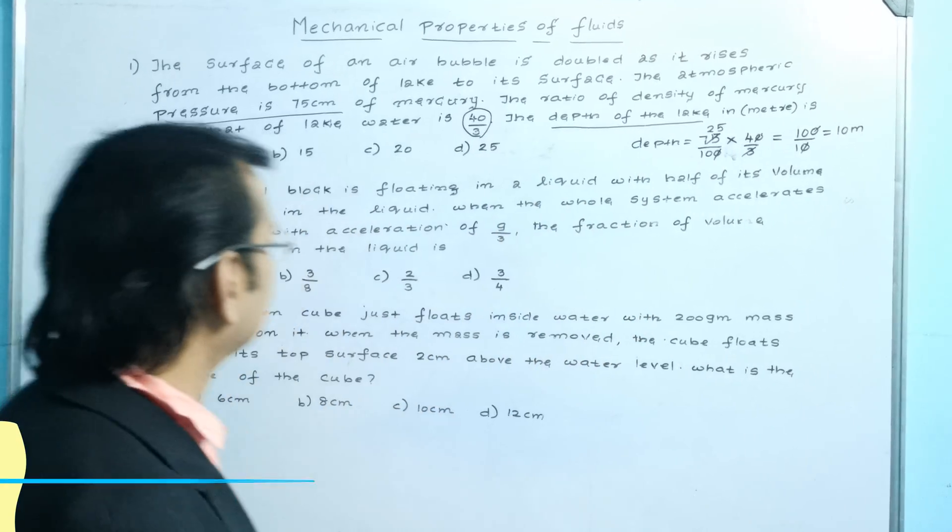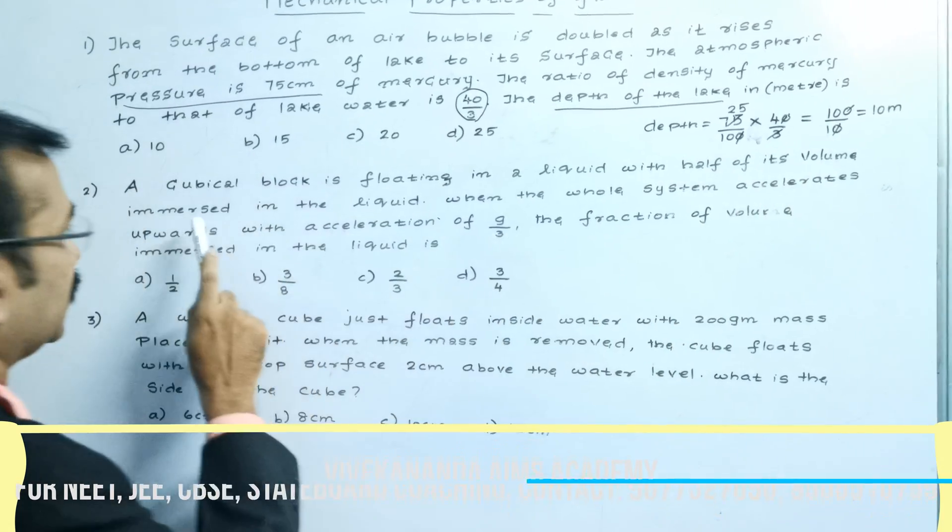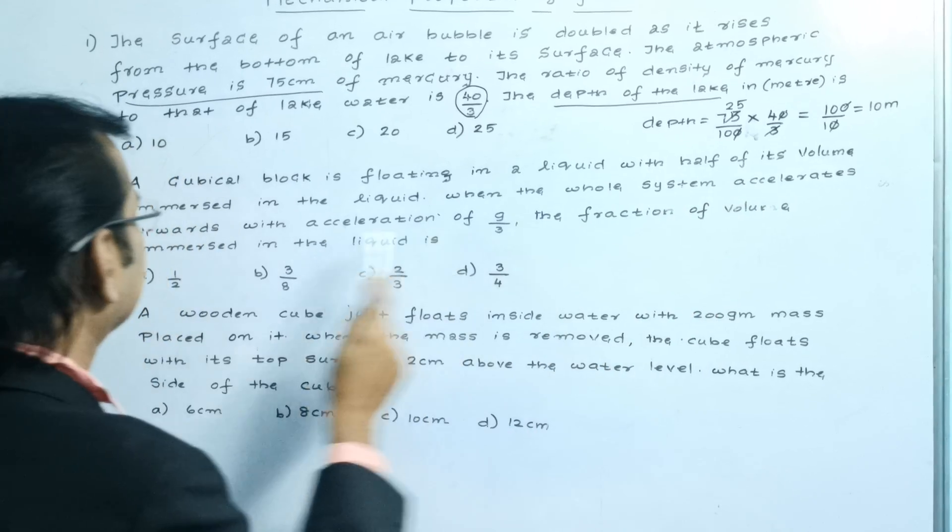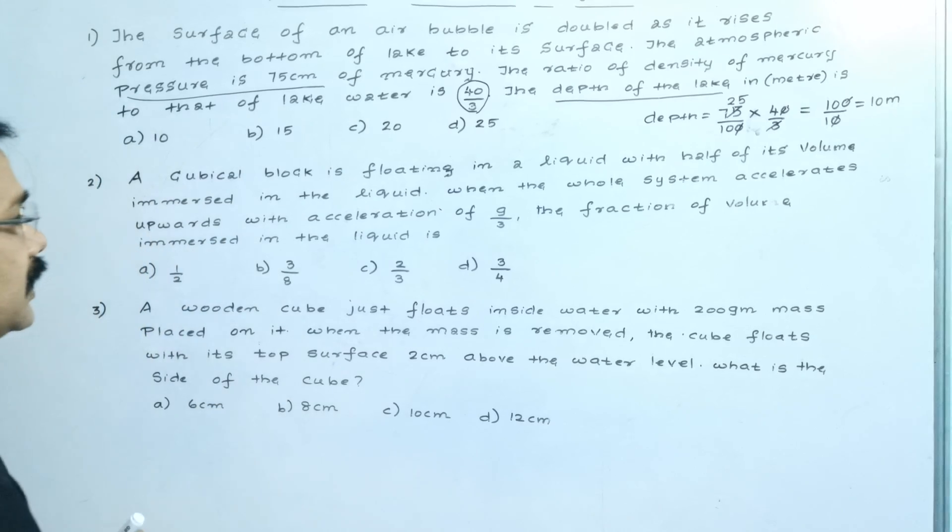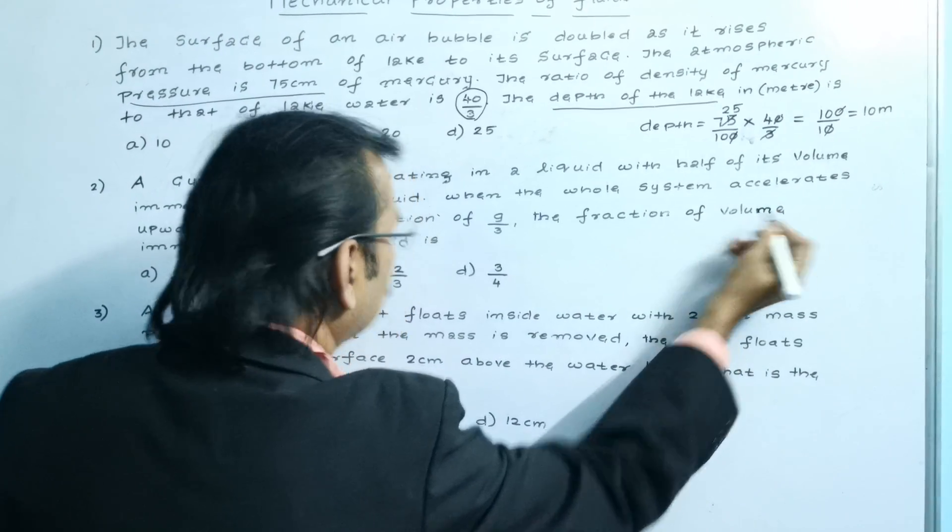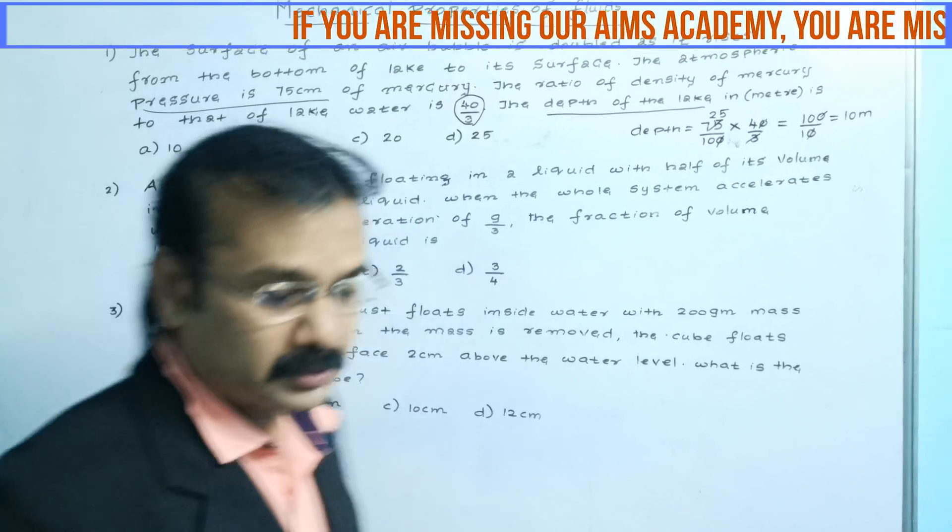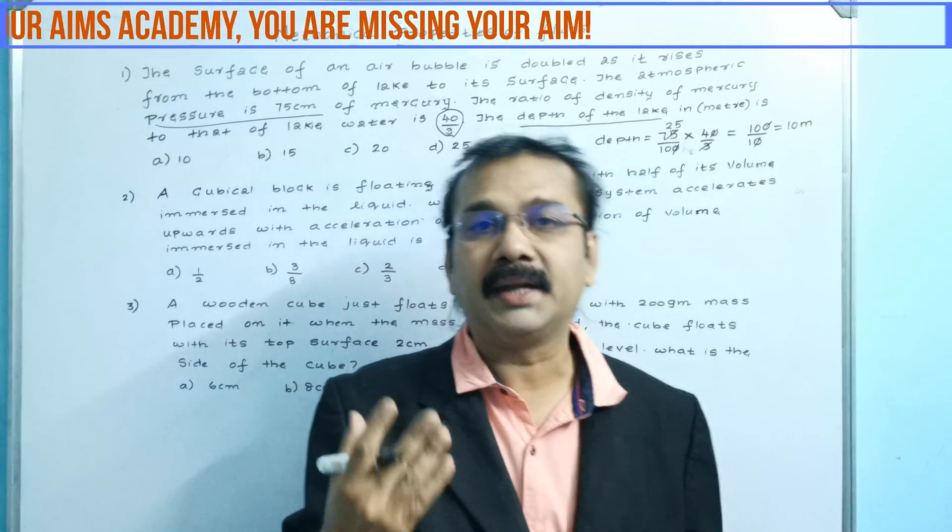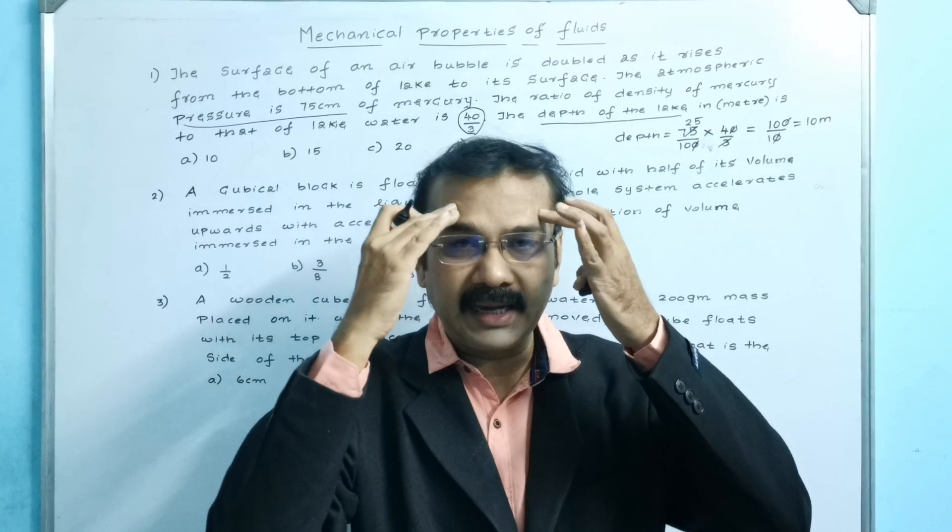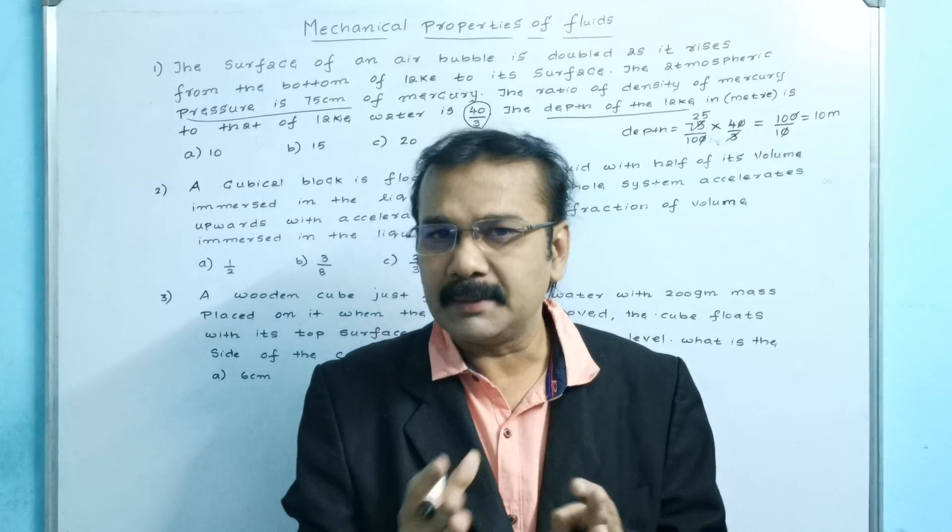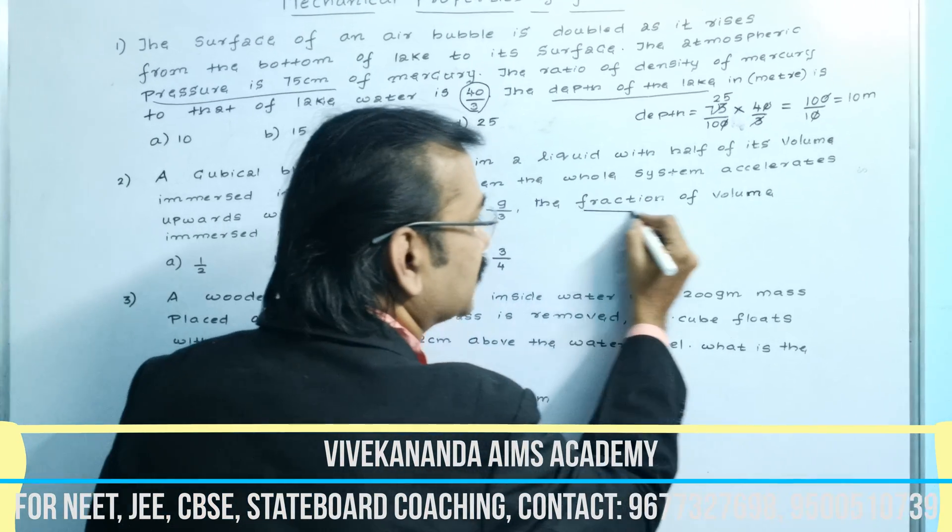Second question: A cubical block is floating in a liquid with half of its volume immersed in the liquid. When the whole system accelerates upwards with acceleration of g by 3, the fraction of volume immersed in the liquid is: 1 by 2, 3 by 8, 2 by 3, or 3 by 4. How big is this question? To understand the question itself, it will take more than 2 minutes. Really, it is a great headache for everyone.